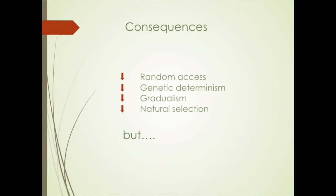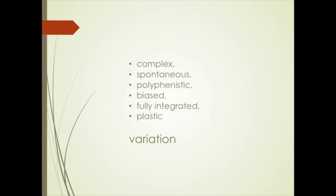Natural selection: we haven't seen what happens in evolution with the new toes and the new cat babies — they are just born. But we can state: A, it doesn't need 1,000 or 100,000 years and selective rounds to generate this variation; instead it comes up in 24–48 hours. B, selection gets a whole bunch of variation presented at once — 18, 20, 24, 26 toes at once. Please choose. Selection can choose out of this plasticity. Instead of all these four attributes of the classic evolutionary theory, we now get a complex, spontaneous, polyphenistic, biased, fully integrated plastic variation.